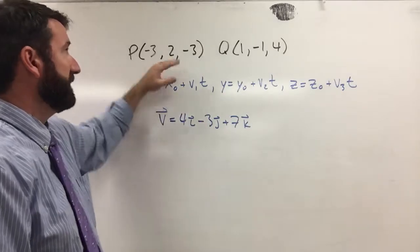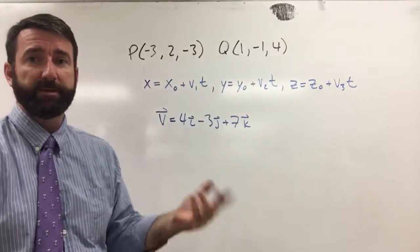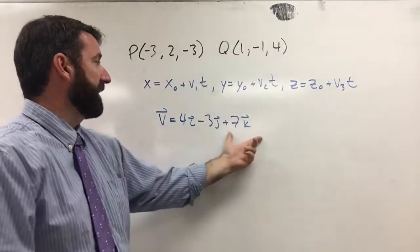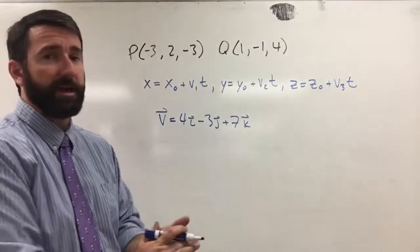So there's a vector that is parallel to this line. And now we've got a point—as a matter of fact, we've got a couple of points on that line—and we can choose either one of them.